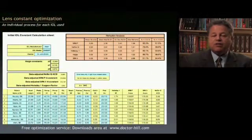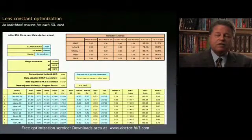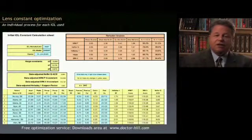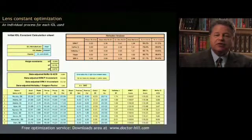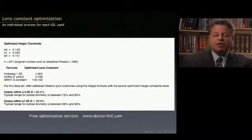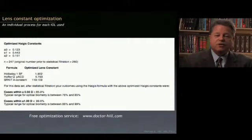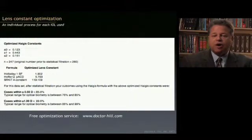Because this instrument is relatively new, most people will need to do some form of LenStar optimization. For the last eight years my office has had a free service where you download a spreadsheet from my website, fill it out with 250 cases, send it as an email attachment, and for free we'll optimize for the basic two-variable third-generation formulas such as Holladay 1, SRKT, and Hoffer Q, and also for the Haigis formula. You'll receive a report showing Haigis constants optimized for your practice, as well as Holladay 1, Hoffer Q, and SRKT, plus a report showing where you stand relative to the rest of the ophthalmic community in terms of accuracy.